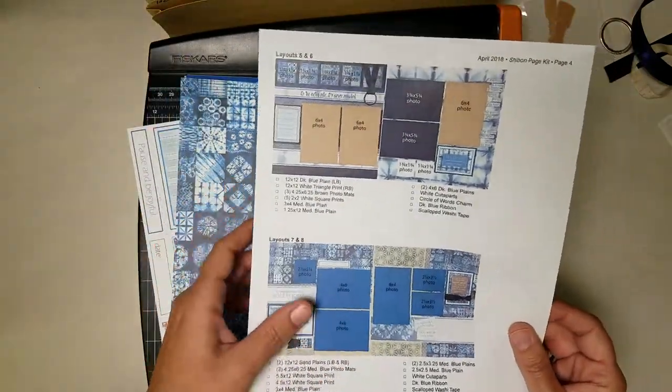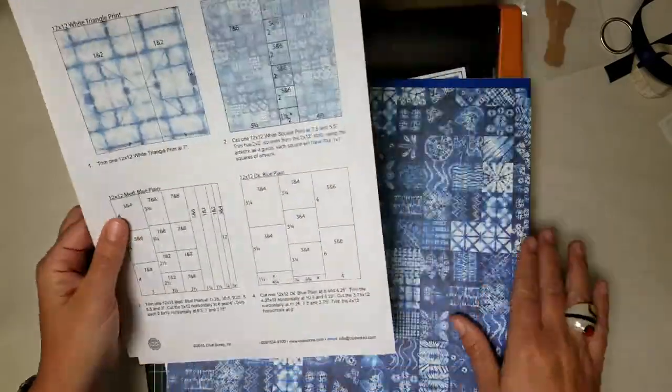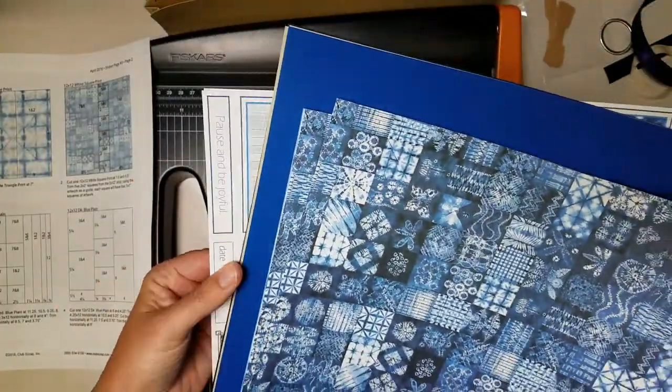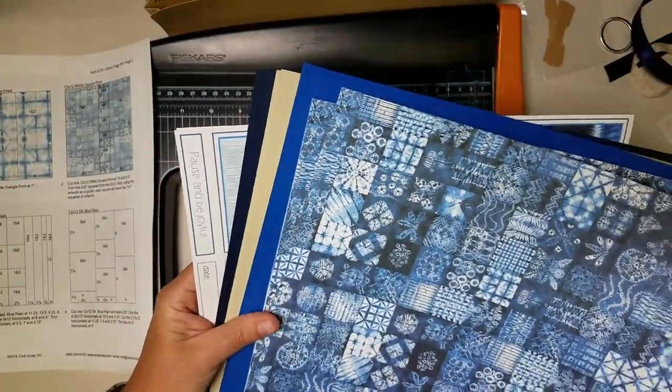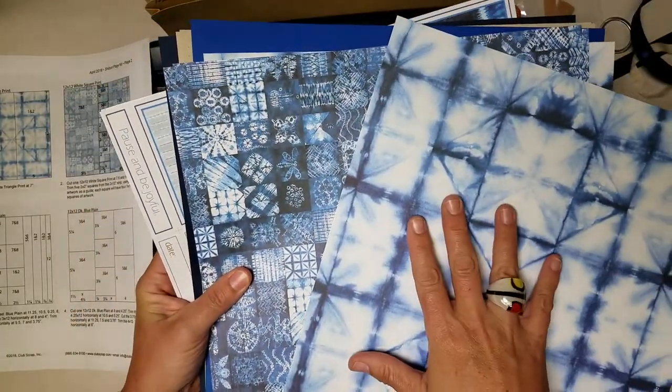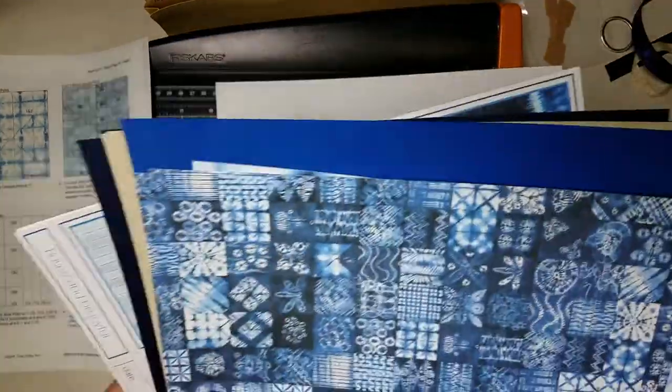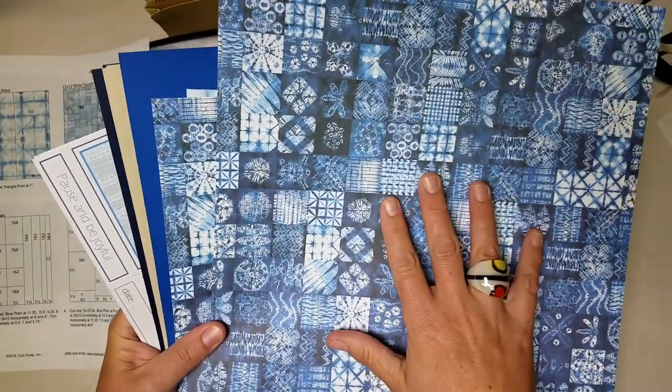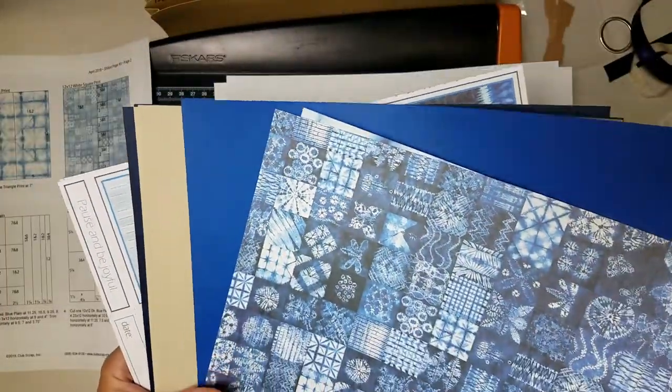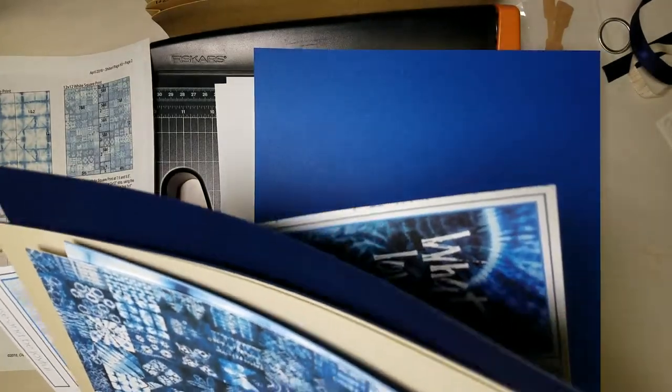Next let's put our papers in trimming order. To figure that out I always start out with my trimming instructions. Here is our order we'll start out with one of those white triangle prints so we get two kinds of prints here the triangle one is the one we're going to trim first. I'll put that plain side up on my work surface then we're going to go to the white square print and we have a medium blue plane and then a dark blue plane.